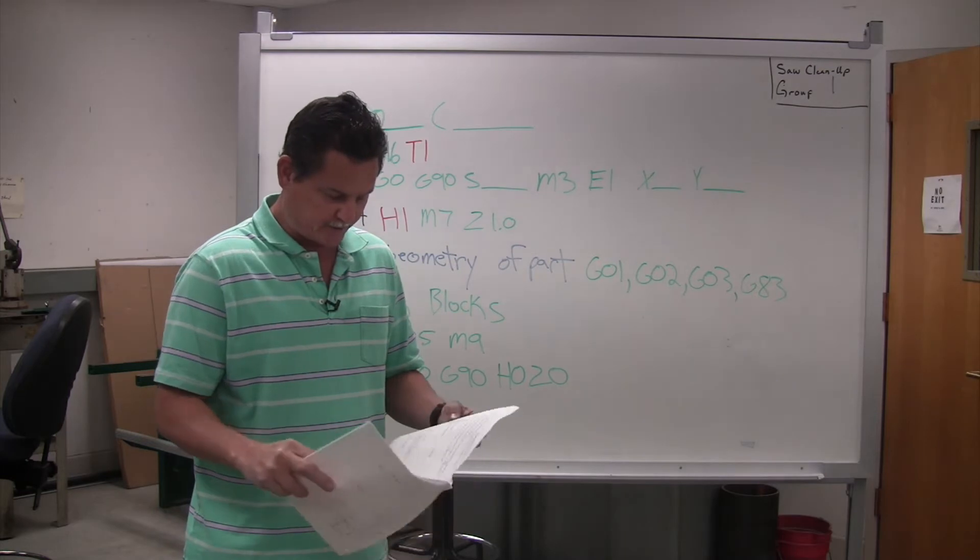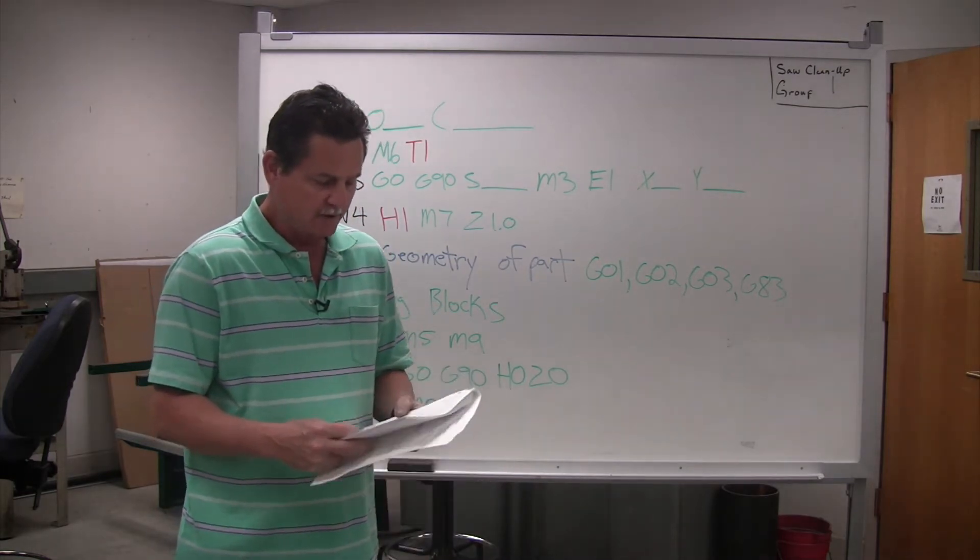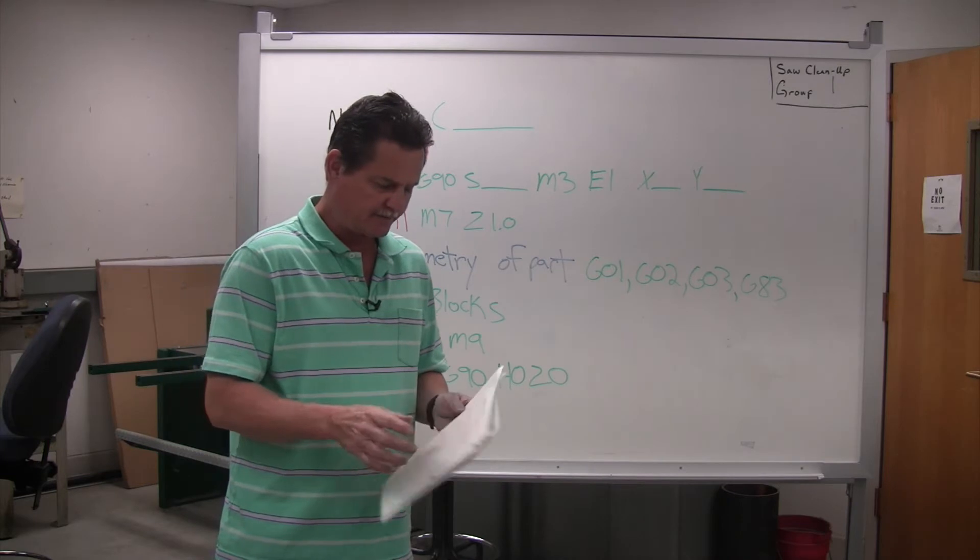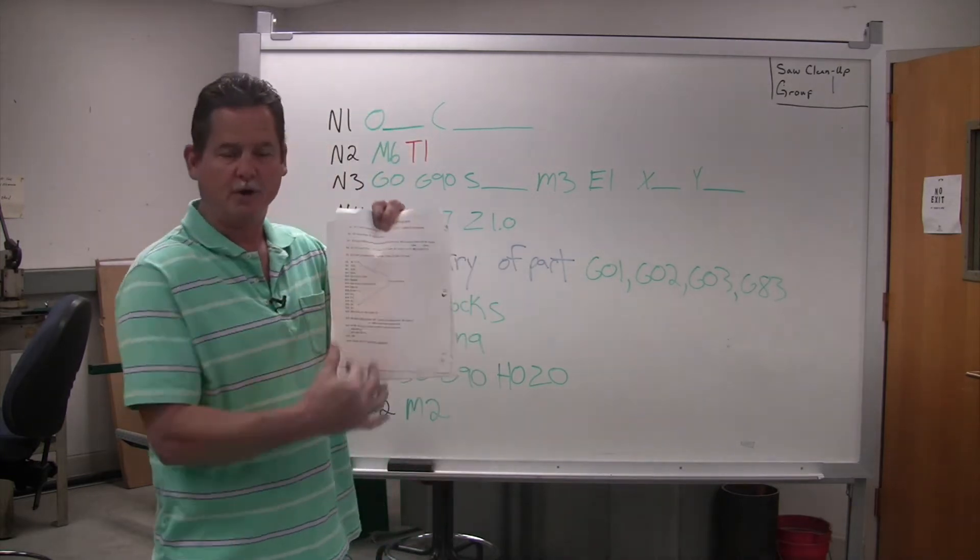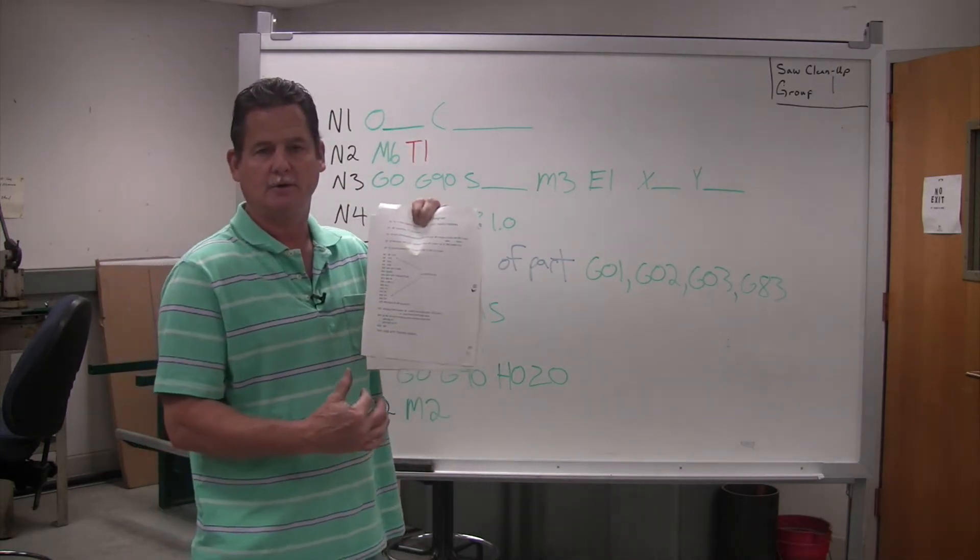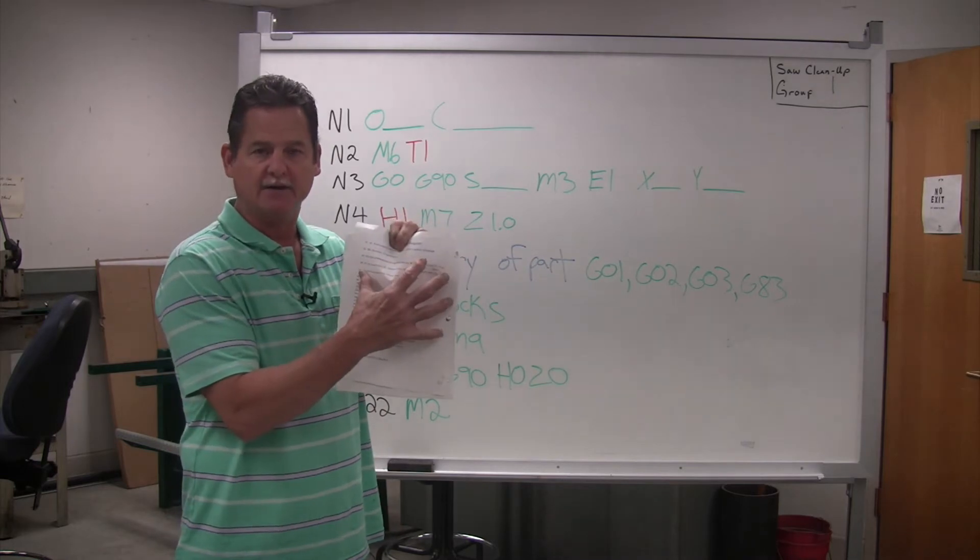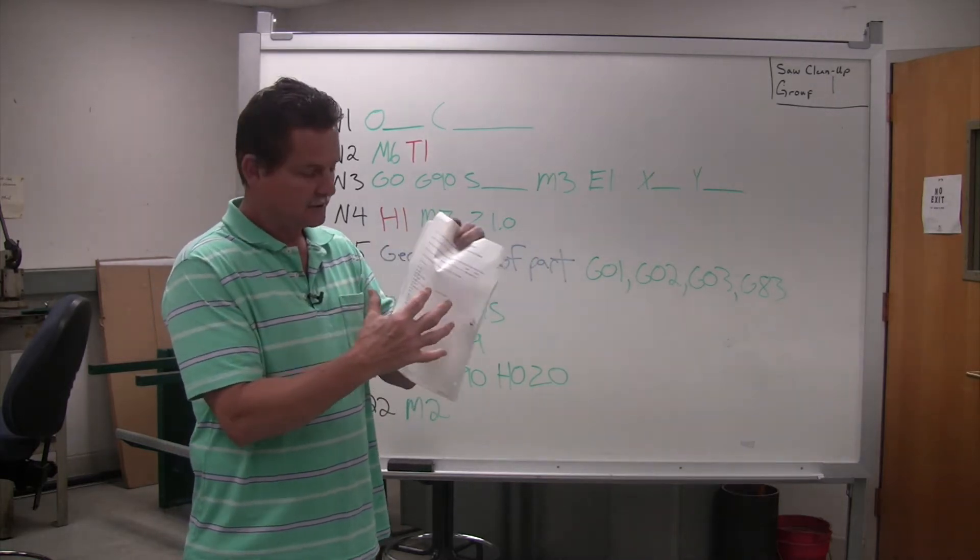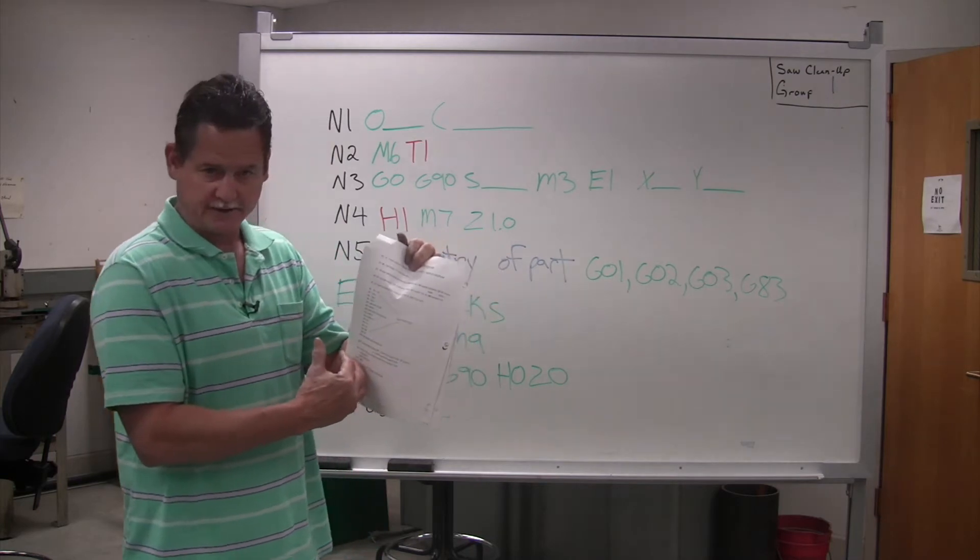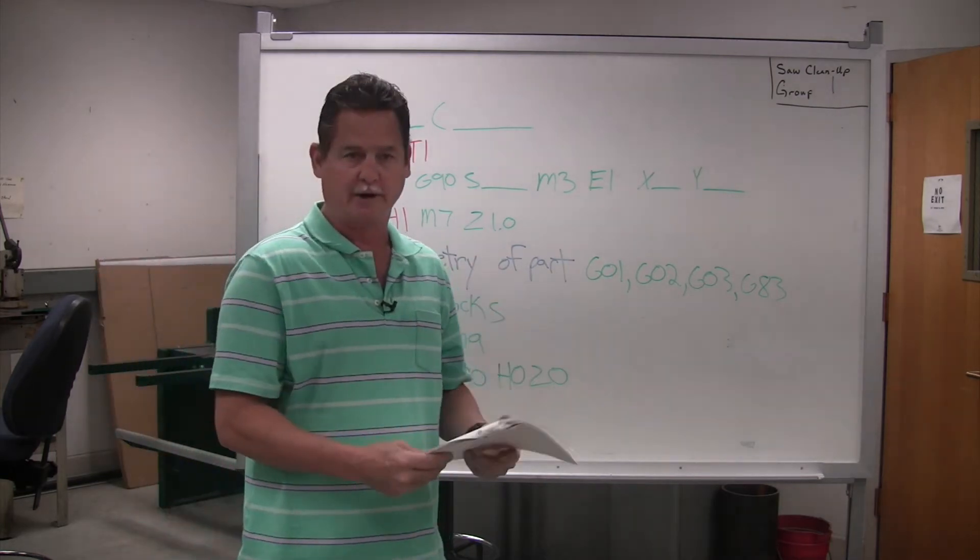So your G-codes and M-codes are very important. On the back page of that first page, you have a G-code programming example wrote out. And you can look at that and kind of compare it to what you're doing and get a good idea, like I said, of how to write a program.